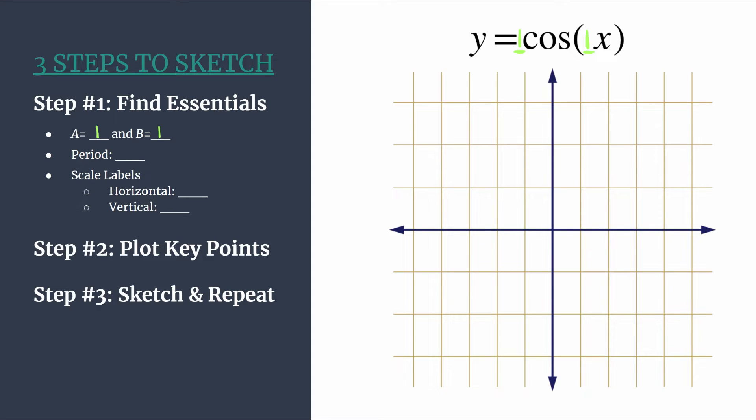Now that we have that, we know we can calculate the period by taking two pi and dividing by our b. So in this case, it's very simple. It's two pi divided by one. So our period is two pi. And remember, that's just the length of one horizontal cycle.